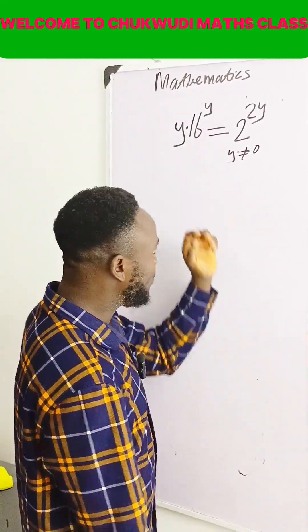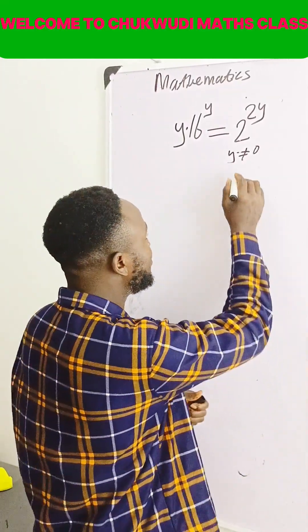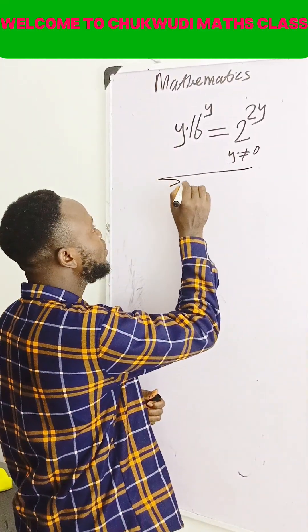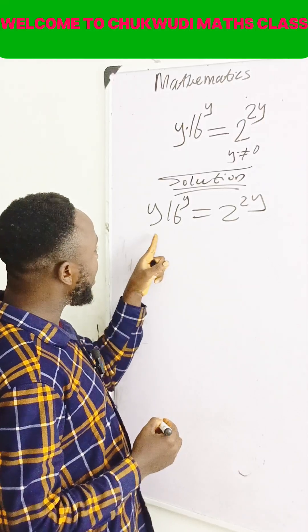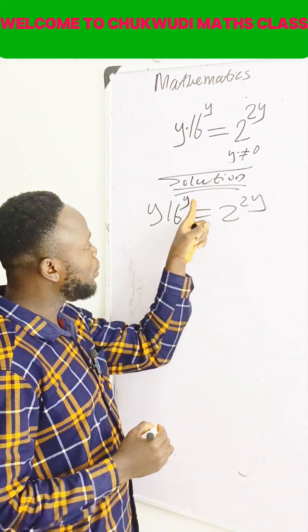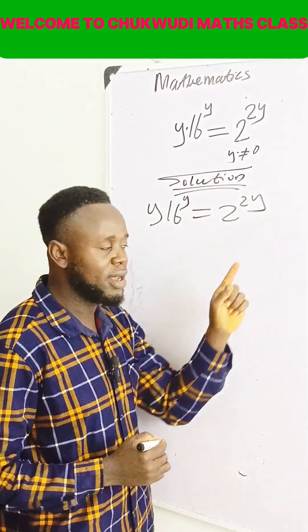Don't be afraid of making that equation. It's very easy to solve. Let's go. Solution. This is y: 16 raised to the power y equal to 2 raised to the power 2y.